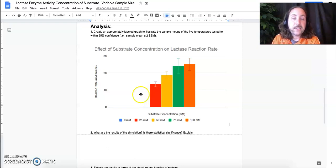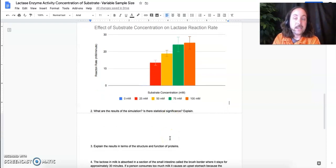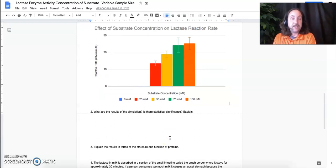So what do we see here? We see as substrate concentration increases, the reaction rate also increases. However, some of the variables have overlapped in their means, in the average. And so one of the things I asked you to do and one of the things you were assessed on was to discuss the results of the experiment.